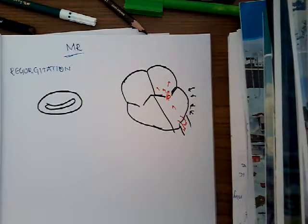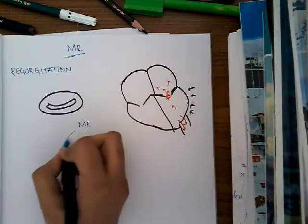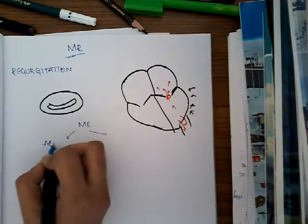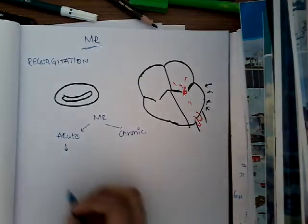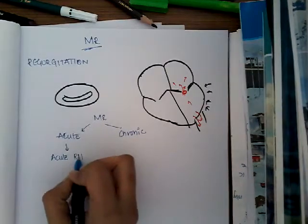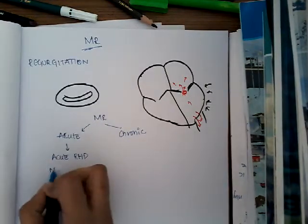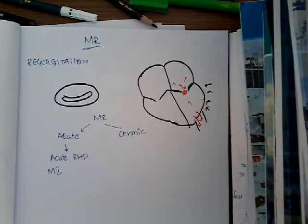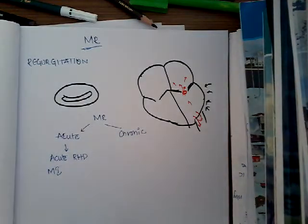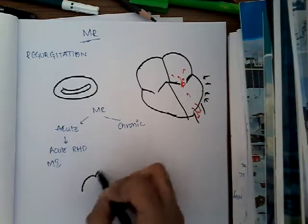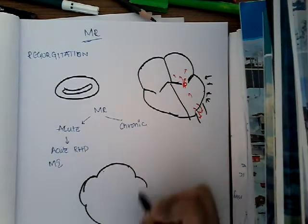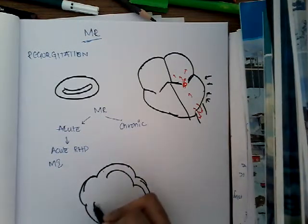Now let us learn about the etiology of mitral regurgitation. Mitral regurgitation can be of two types: acute mitral regurgitation and chronic mitral regurgitation. The most common cause of acute mitral regurgitation is acute rheumatic fever or acute rheumatic heart disease. Another cause is myocardial infarction. Let us learn the causes and why each one occurs.